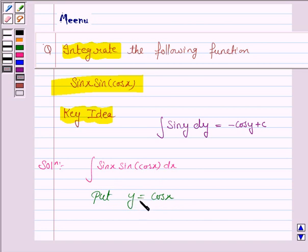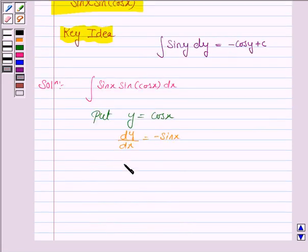Now we differentiate this with respect to x. So dy by dx is equal to minus sin x. This implies dy is equal to minus sin x dx, and this implies sin x dx is equal to minus dy.